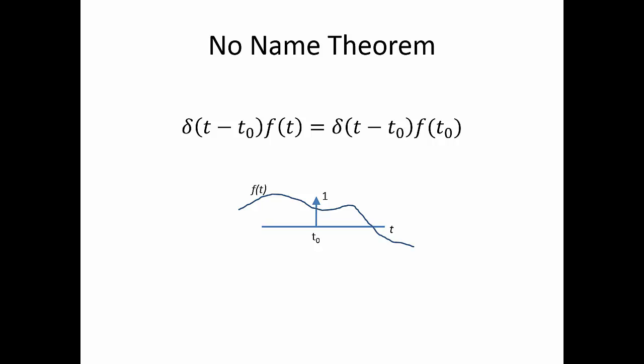Related to impulse functions, there are two theorems that apply. One of them we're going to talk about here. I call it the no-name theorem because nobody's ever given a name in any literature I've read. And I want to have some way of communicating with you what we're talking about when I'm referencing this particular theorem. The other theorem you need to know you're going to learn in learning outcome 2-3, and that's the sifting theorem.